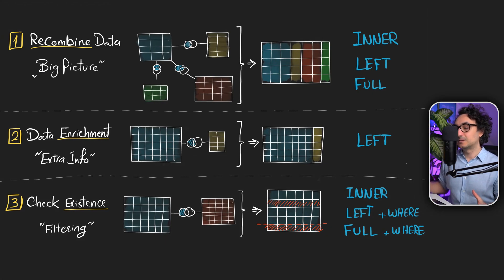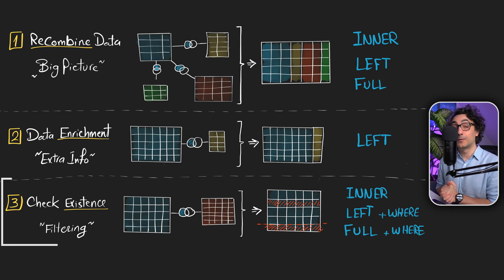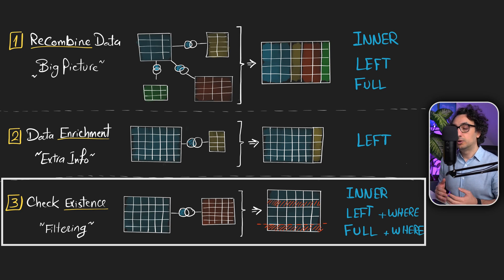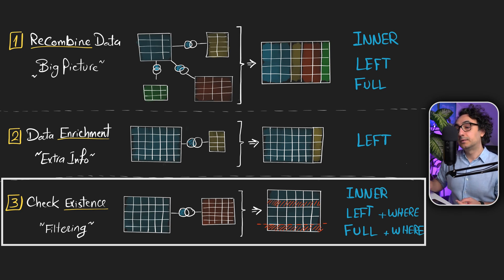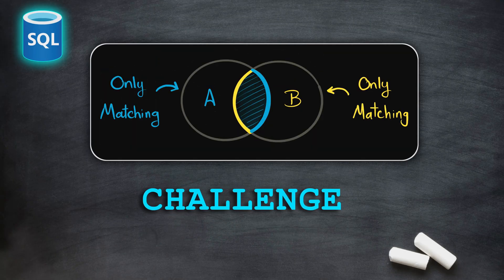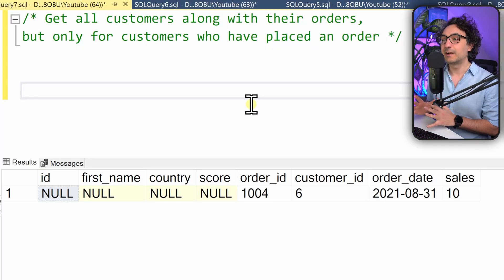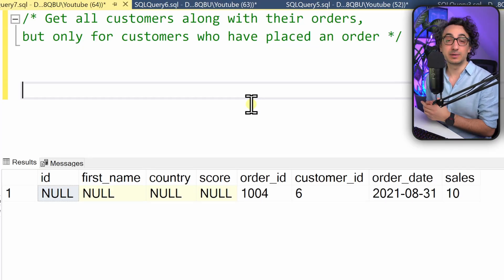The full anti-join is used exactly for the last use case: checking existence. Combining the full join with the WHERE clause lets you check for the non-existence of your data in another table. That's the exact scenario for this.